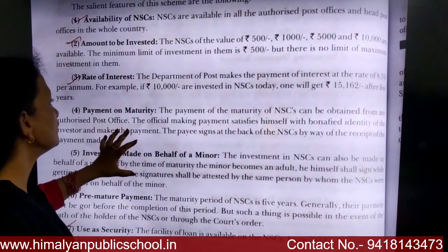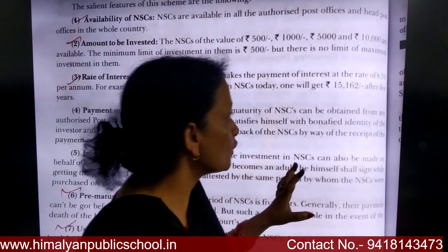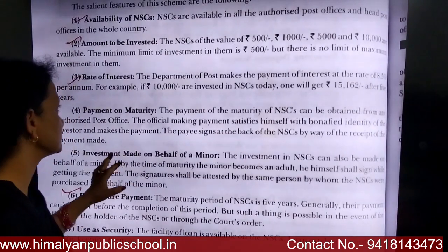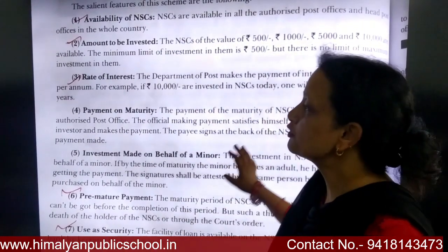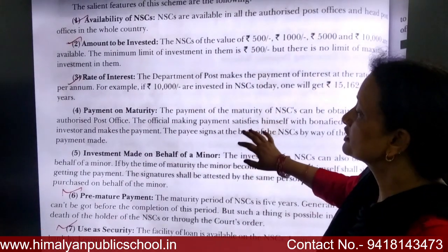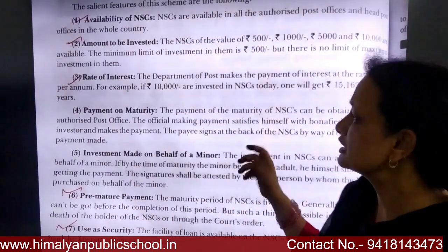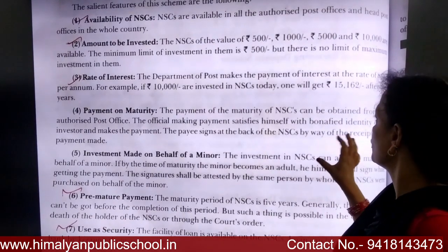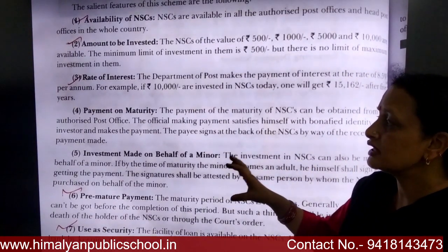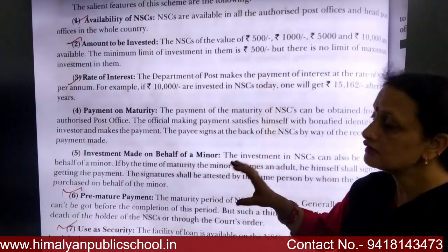Payment on maturity: The payment on maturity can be obtained from any authorized post office. When the maturity amount is due, you can collect it from the post office. The payment satisfies identity verification requirements, and investors can receive their maturity payments accordingly.